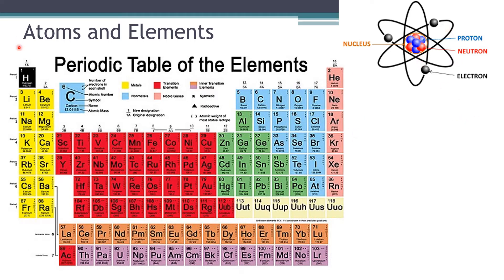Atoms come in many different types shown on the periodic table. The different types are called elements. They are organized by the number of protons in the nucleus — that number increases as you go across the periodic table. The difference between hydrogen, helium, lithium, beryllium, and carbon is the number of protons in the nucleus. These different elements have different chemical properties that make them behave differently.